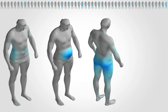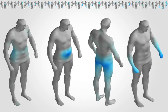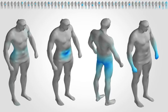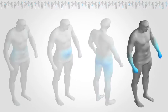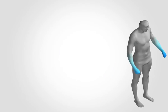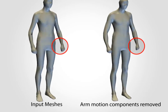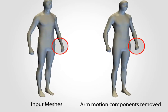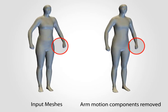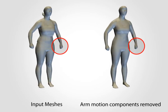To our surprise, some of the components found by our method exclusively showed pose changes. We can remove such components, for example, to align the arms in the data set.